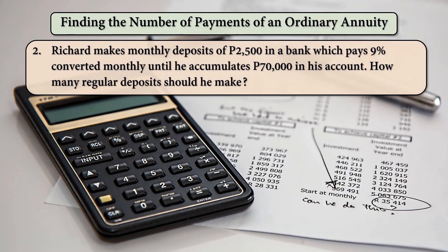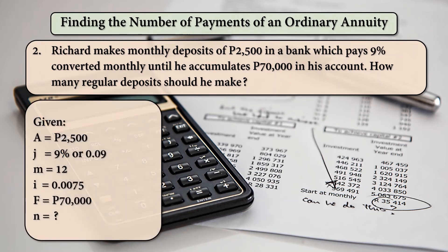Second example: Richard makes monthly deposits of 2,500 pesos in a bank which pays 9% converted monthly until he accumulates 70,000 pesos in his account. How many regular deposits should he make? Given: A is 2,500, J is 0.09, M is 12, I is 0.0075, and F is 70,000 pesos.